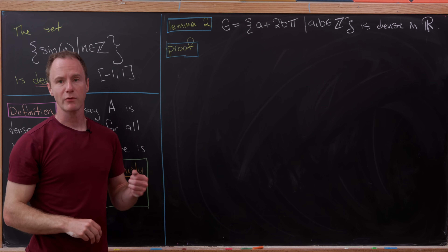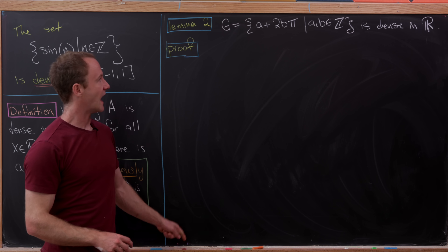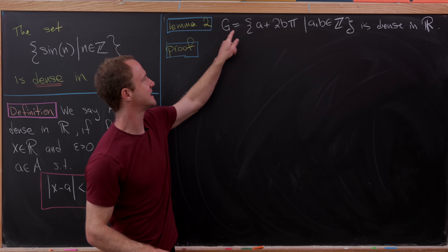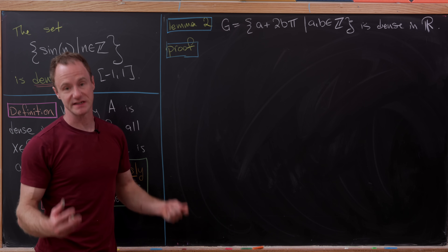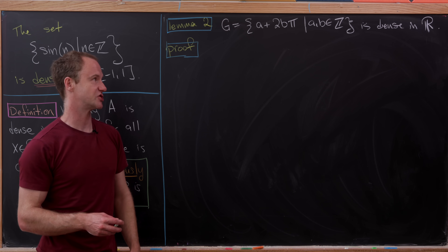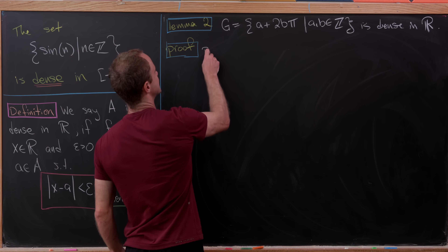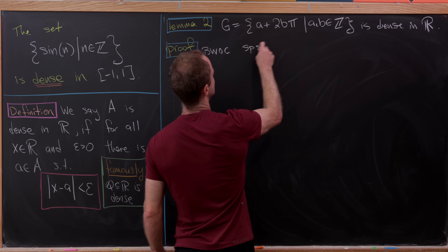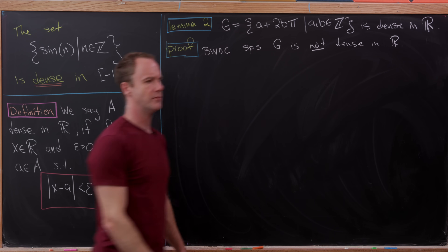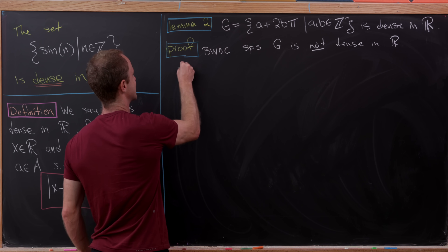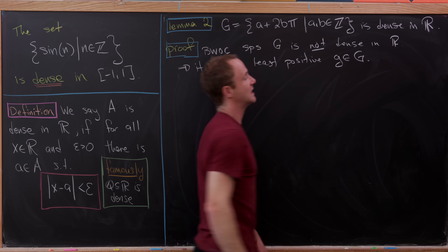Now let's use that lemma to prove a second result particularly useful for our final goal. Notice that the set G = {a + 2bπ : a, b ∈ ℤ} is definitely a subgroup of ℝ — that's easy to check. We'll show it's also dense in ℝ by contradiction. So suppose G is not dense in ℝ; then by our first lemma it has a least positive element. Let's call that least positive element little g, and write it as g = m + 2nπ.